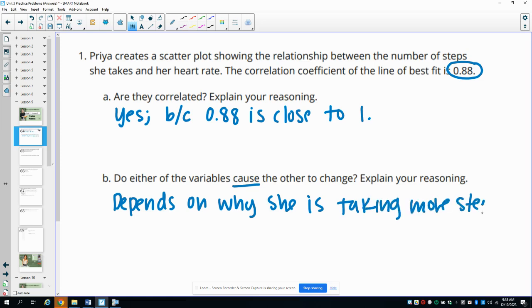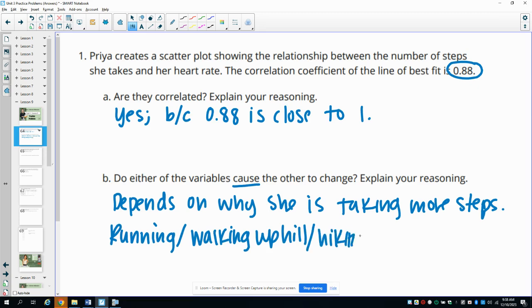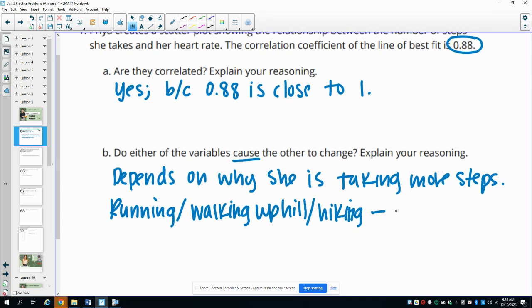And that's because if she's running, if she's walking uphill, like hiking, or doing something that is more exercise related, then this is going to cause the increase in heart rate, or this is going to cause her heart rate to increase.